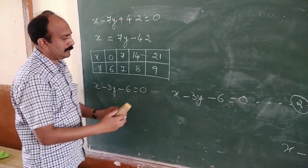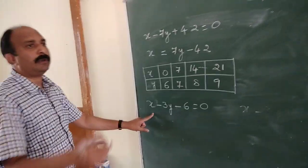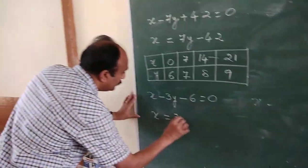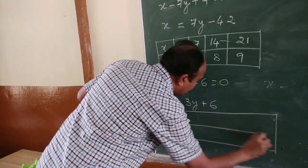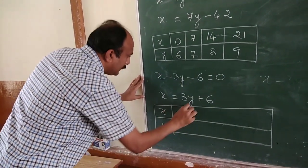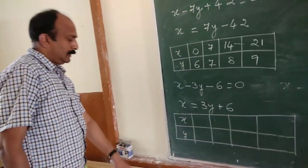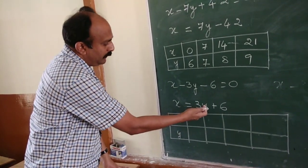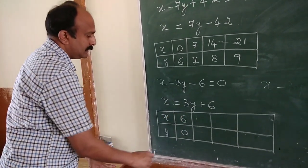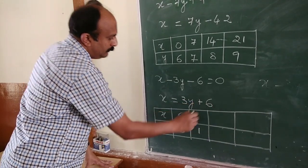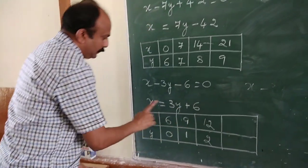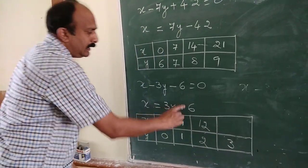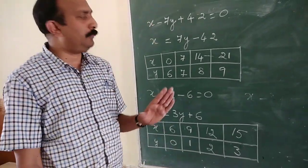Now consider the second equation: x minus 3y minus 6 equals 0. Rewriting as x equals 3y plus 6, we find four sets of solutions. Taking y equals 0: x equals 6. Taking y equals 1: x equals 9. Taking y equals 2: x equals 12. Taking y equals 3: x equals 15. Both tables are ready for drawing the graph.